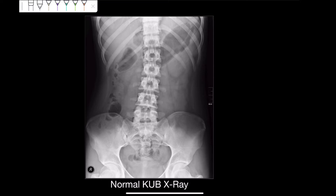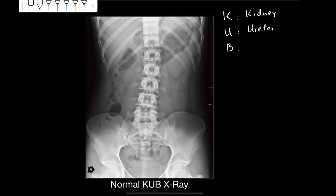So what does KUB stand for? The word K refers to the kidney, the word U refers to ureter, and the word B refers to bladder — specifically, the urinary bladder. So this abdominal x-ray must be showing these three structures, and that is what we need to know.